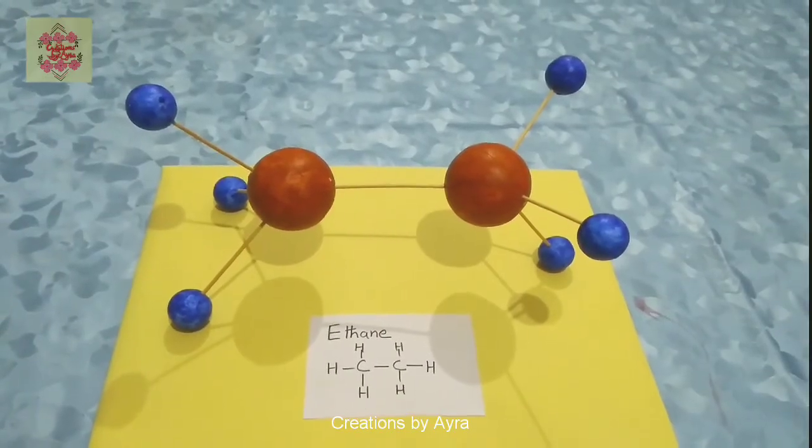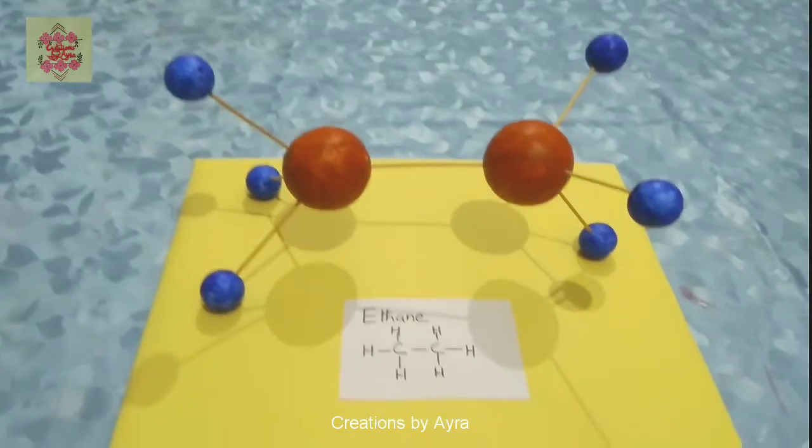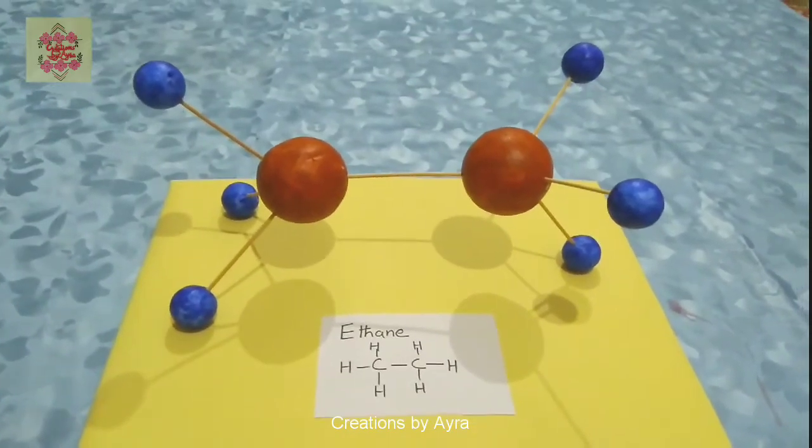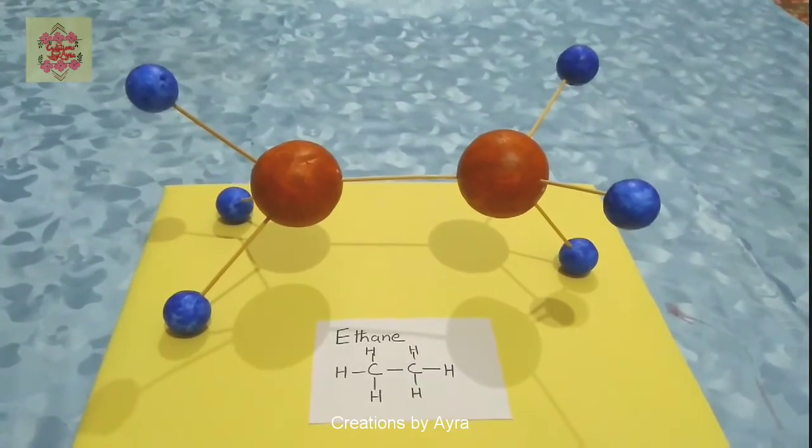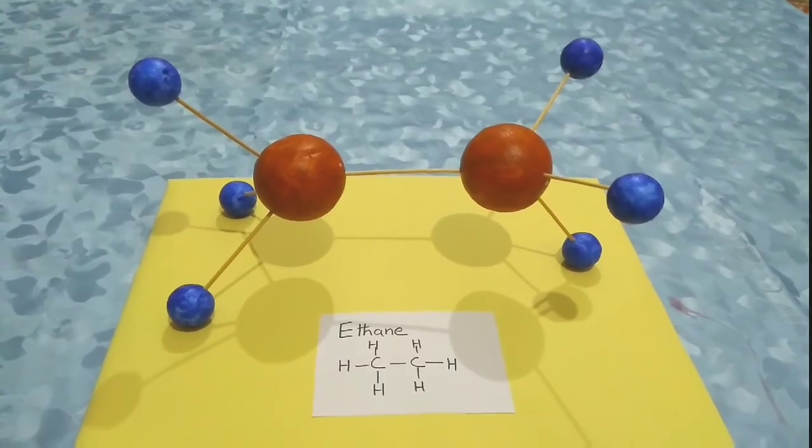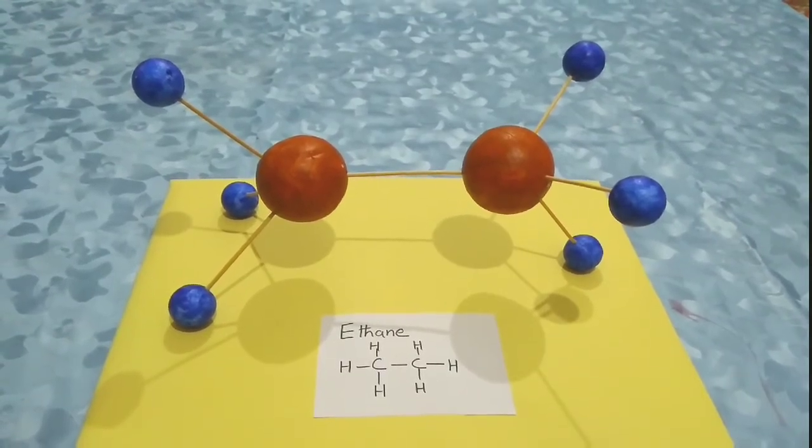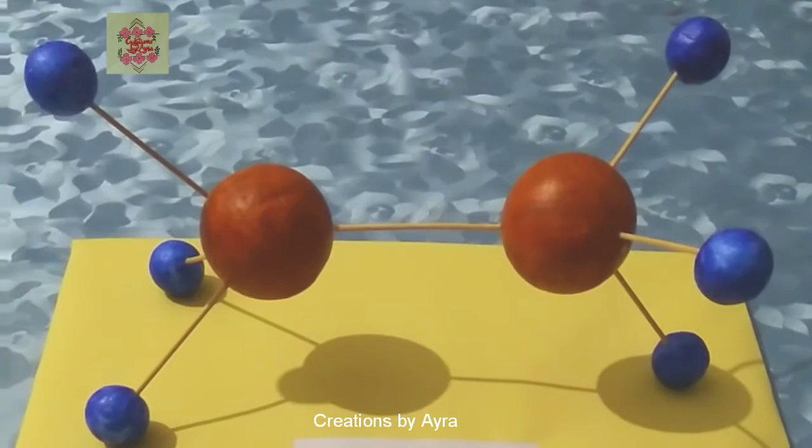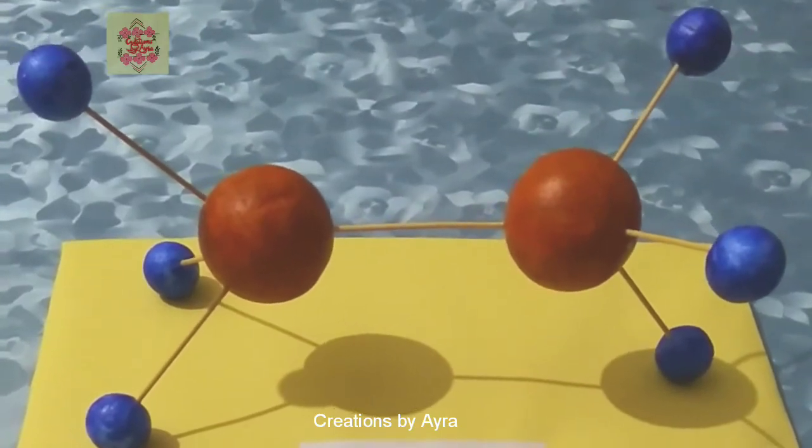Either you can use a piece of cardboard covered with chart paper or a styrofoam sheet covered with chart paper. Don't forget to write the molecule name and formula. You can also write symbol C for carbon and H for hydrogen atom on each of these balls respectively.